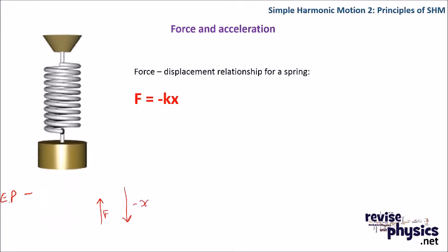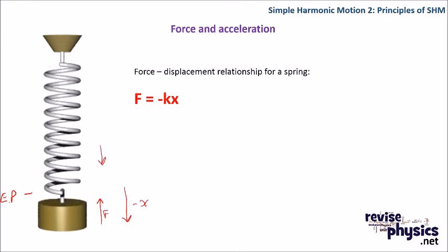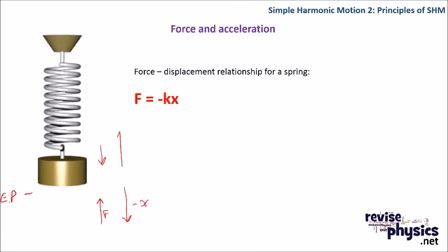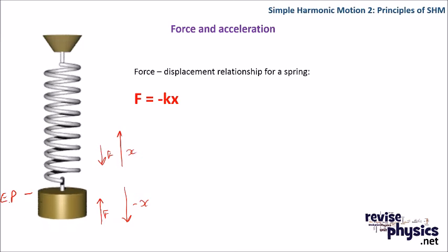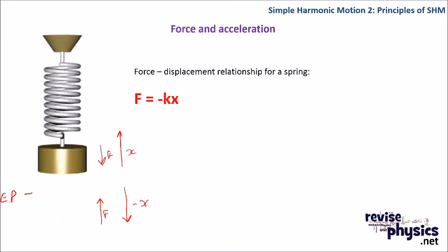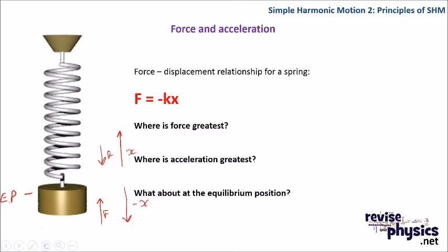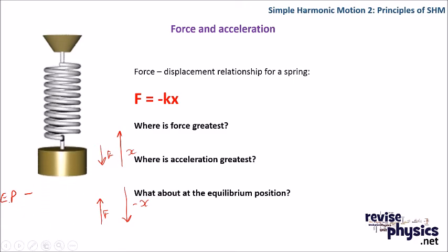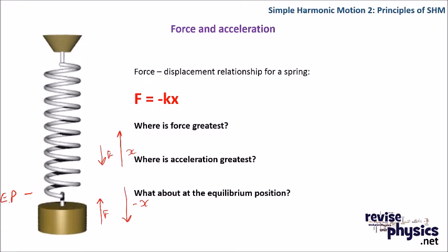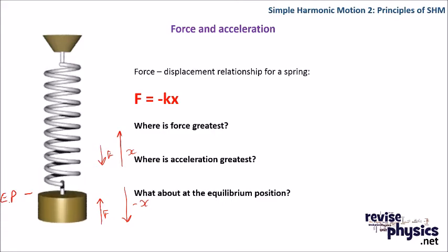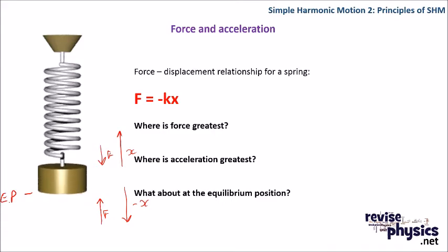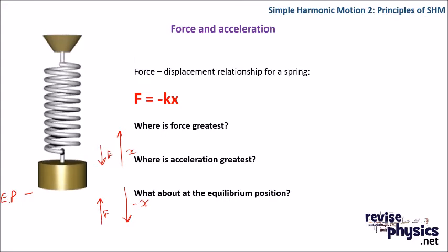When it's at the top here, the force is pulling it down towards the equilibrium position, but our displacement X is positive in that direction away from the equilibrium position. Where is the force going to be the greatest? Well, the force is greatest where the spring is either most stretched or most compressed, at either of the amplitudes or the maximum displacement.